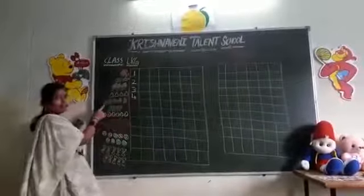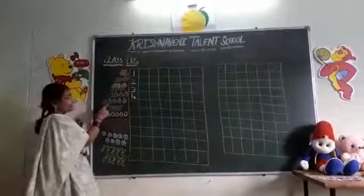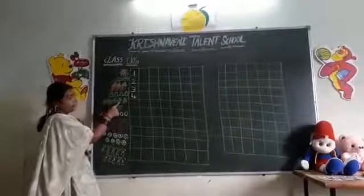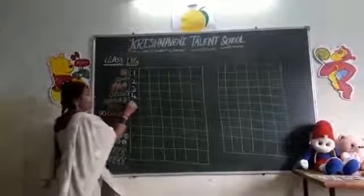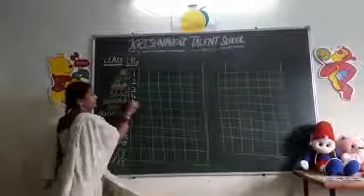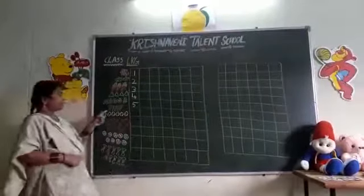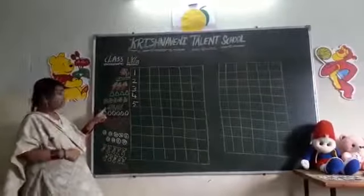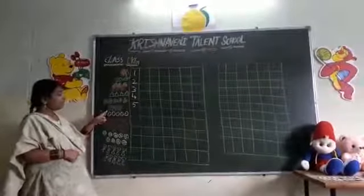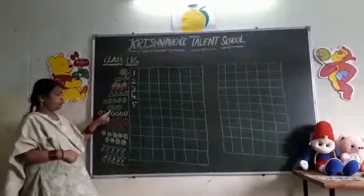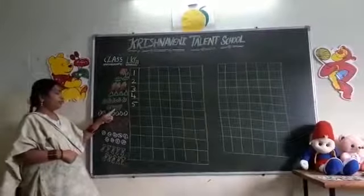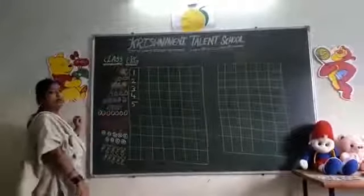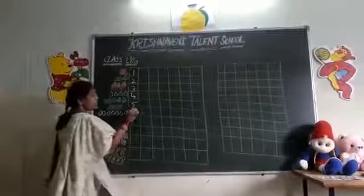Next. How many butterflies? 1, 2, 3, 4, 5. 5 butterflies. Next, here which picture is this? Pencils. Count this: 1, 2, 3, 4, 5, 6. How many pencils? 6 pencils.